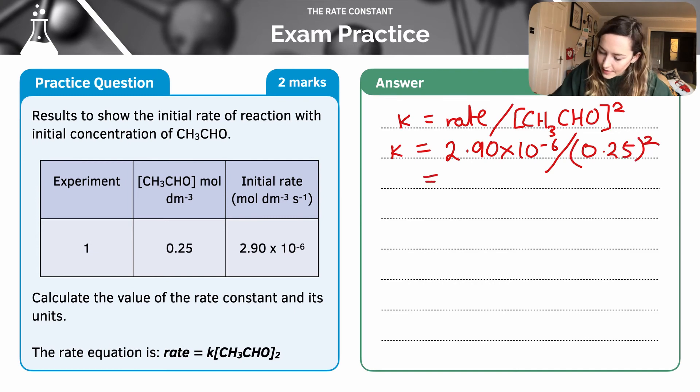That number divided by my concentration of my products, that's 0.25 squared. So I'm going to put that into my calculator and I am going to calculate the value of k to be 4.64 times 10 to the minus 5. Next,